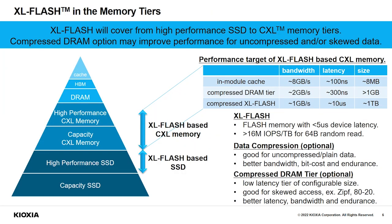This shows the expected memory tiers in the next few years. We expect that CXL memory will change the hierarchy, and we expect XLFlash-based CXL memory will cover these areas. Our POC module will consist of an in-module SRAM cache, compressed DRAM tier, and XLFlash tier. XLFlash is a low-latency flash memory with high IOPS per TB — about 1 GB/s in 64-byte random access. By combining these tiers, we are trying to replace DRAM at lower cost.